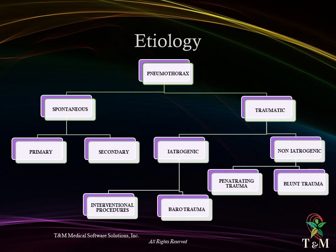Pneumothorax could be spontaneous or traumatic. Spontaneous pneumothorax could be primary or secondary. Traumatic pneumothorax could be iatrogenic or non-iatrogenic. Iatrogenic traumatic pneumothorax may follow interventional procedures or barotrauma, while non-iatrogenic traumatic pneumothorax could follow penetrating trauma or blunt trauma.